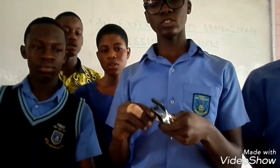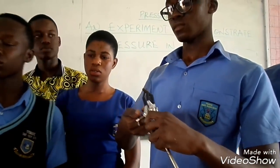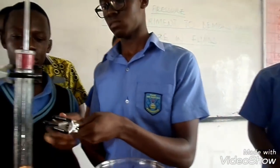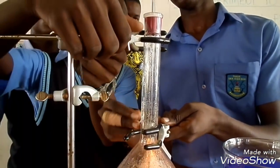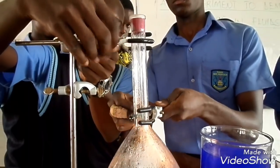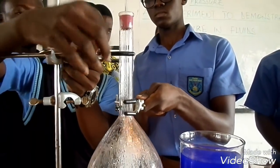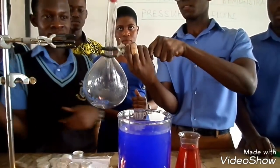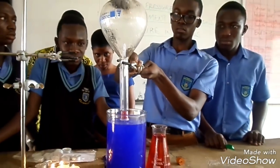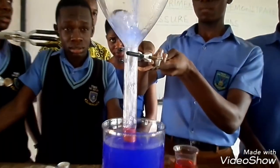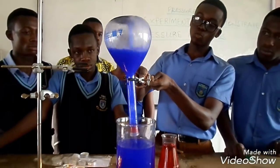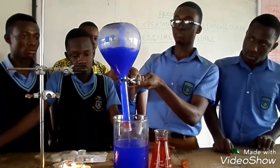We are going to use the retort clamp to hold this so that we can invert it. So as we can see, the pressure exerting on the fluid has caused this to work as a fountain. We term it as a pressure fountain.